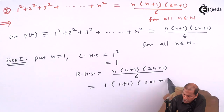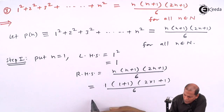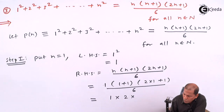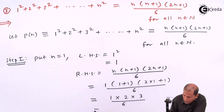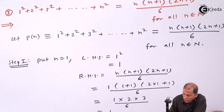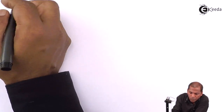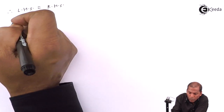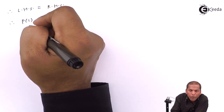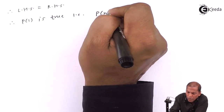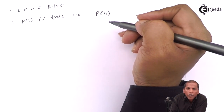Next bracket: 2 into 1 plus 1, which gives us (1 plus 1) the whole thing divided by 6. So that equals 1 into 2 into (2 plus 1), giving 3, and the whole thing divided by 6. On cancellation we get 1. So in this way we prove LHS equals RHS, and therefore P(1) is true. That is P(n) is true for n equal to 1.